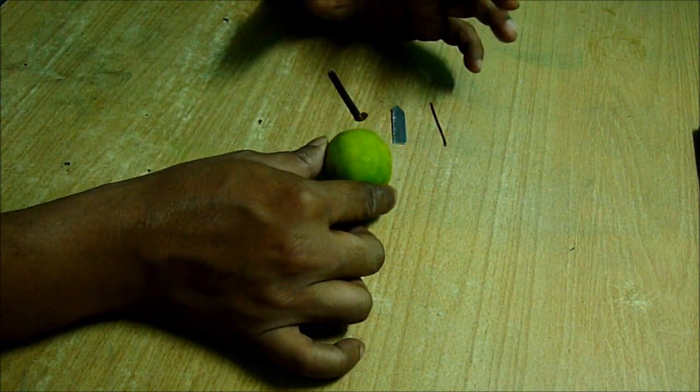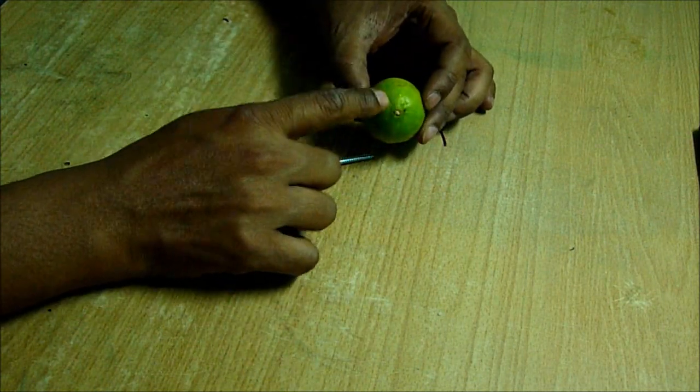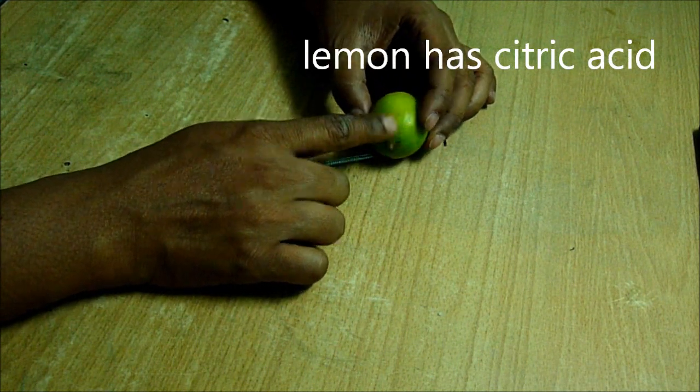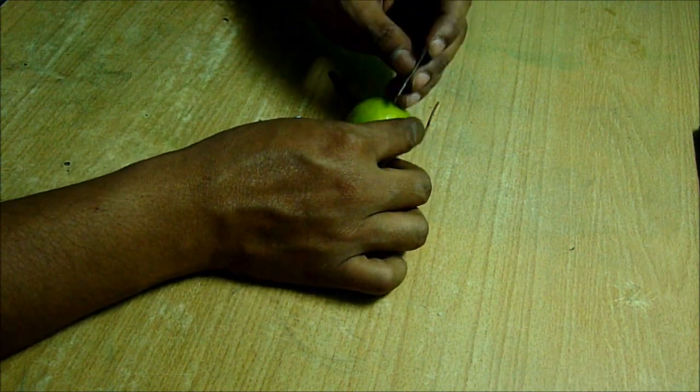The working principle is same like a carbonic acid battery. The juice inside the lemon will work as an acid, citric acid, and then I will put the two metals into it.